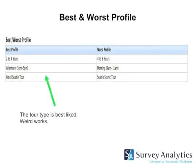The system will also show you the best and worst profile — the best and worst combination of levels of the attributes. With the best profile, we have two to four hours in the afternoon between 3 and 5 p.m., and it's the weird Seattle tour. The worst or most unpopular would be four to six hours in the morning with the Seattle scenic tour — which is a pity, because Seattle is relatively scenic.